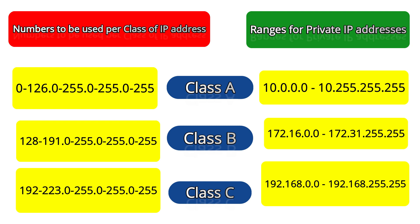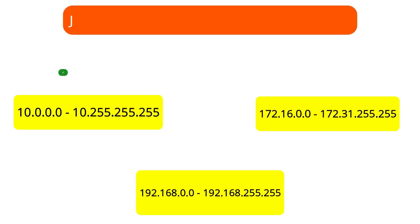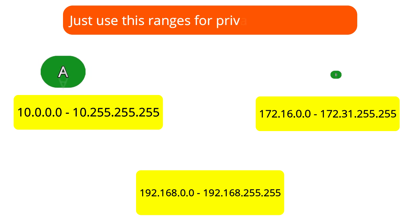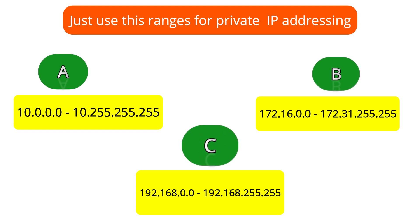In summary, in order to create a network in your home or enterprise, you will have to use the range of private IP addresses that suits your needs or the size of your network. For a class A network, class B, and class C, each has its own specific private IP address range to work with.